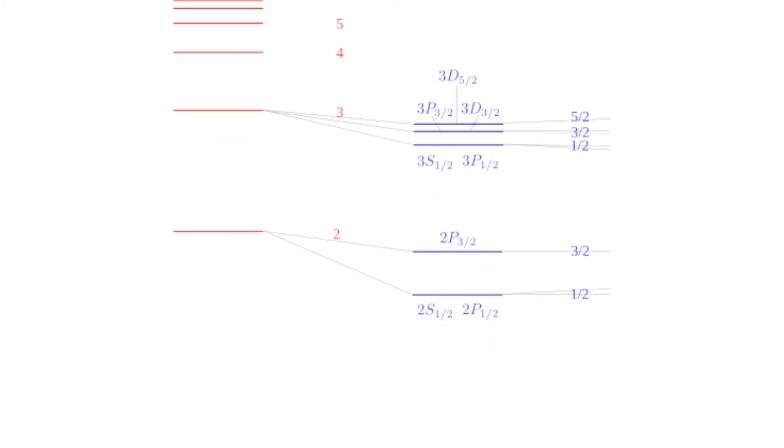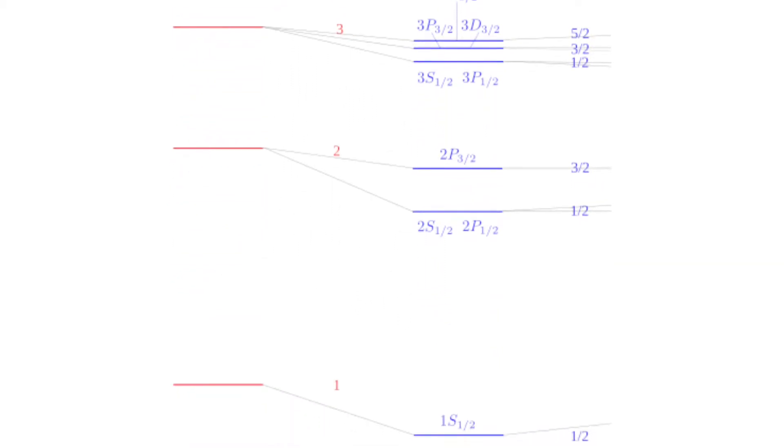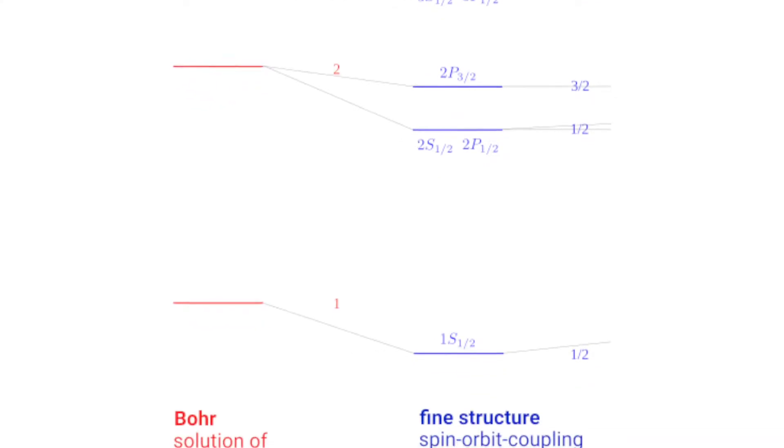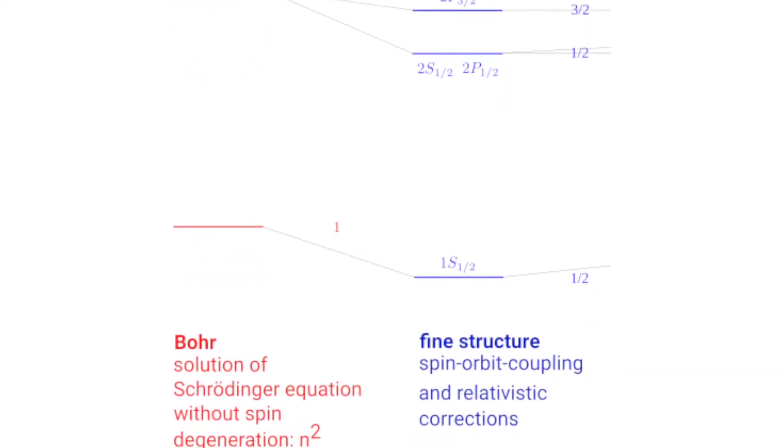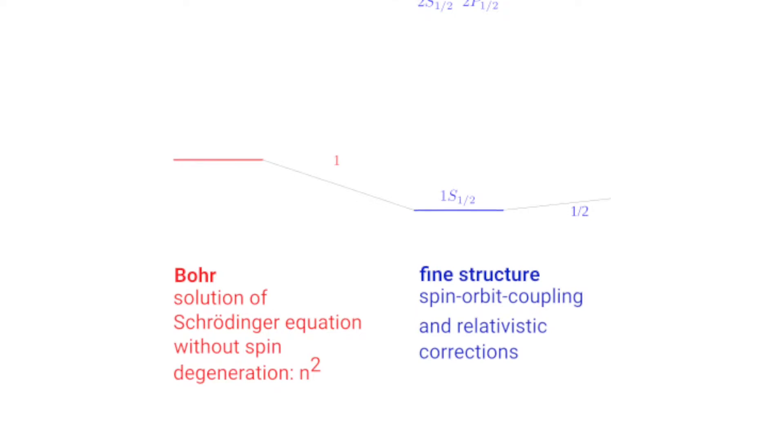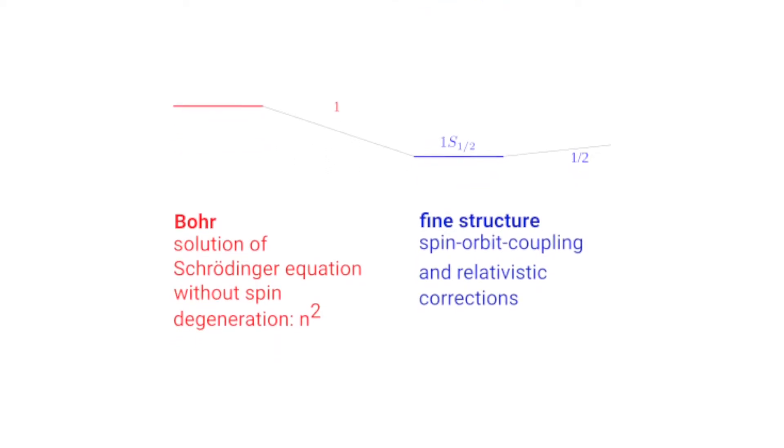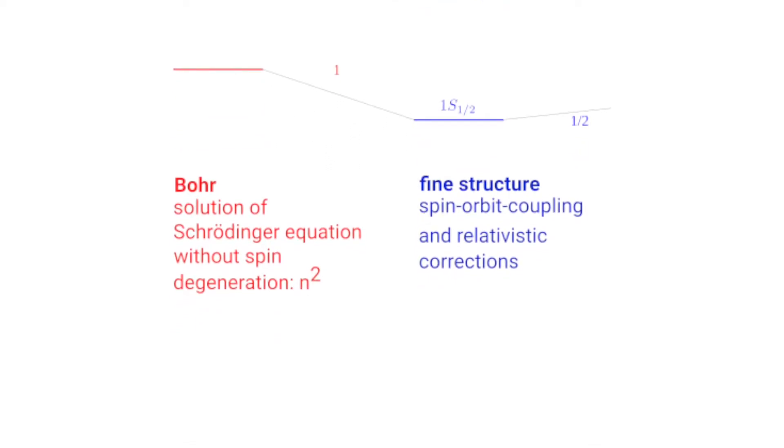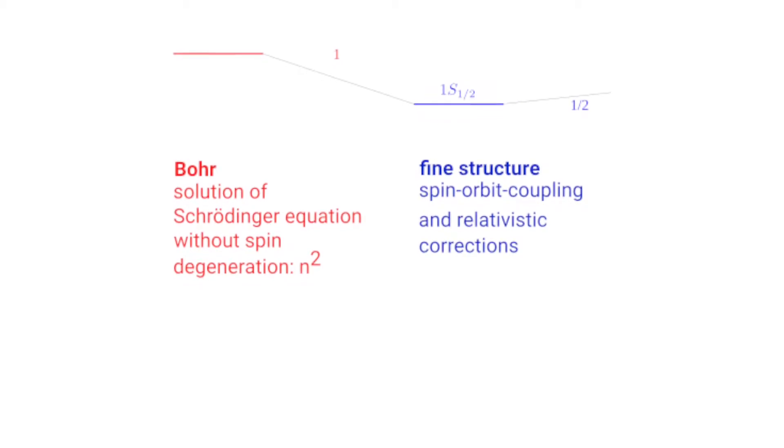This phenomenon can be found with hydrogen as well as with alkali atoms, which are similar to hydrogen due to their one valence electron. The fine structure has its origin in the fact that in addition to the electrostatic interaction between the electron and the atomic nucleus, potential energy is also contained in the interaction between the magnetic moment of the electron and its orbital motion around the nucleus. This is also known as spin-orbit coupling.